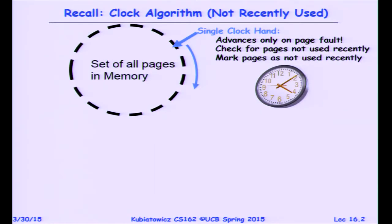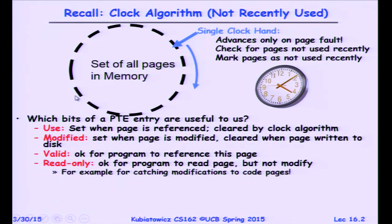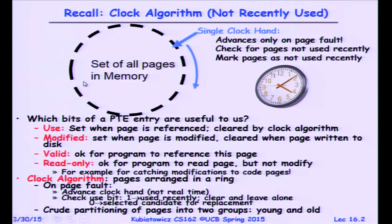If you remember from last time, we talked about the clock algorithm. The reason it's called the clock algorithm is because you can make it look like a clock — imagine putting all of the pages in a giant ring, and we slowly walk through them as we need new pages, deciding which ones are free and which aren't. There are essentially four bits in page table entries: the use, modified, valid, and read-only bits. Modified is sometimes called dirty. The clock algorithm uses at least the use bit to decide whether pages are busy or not.